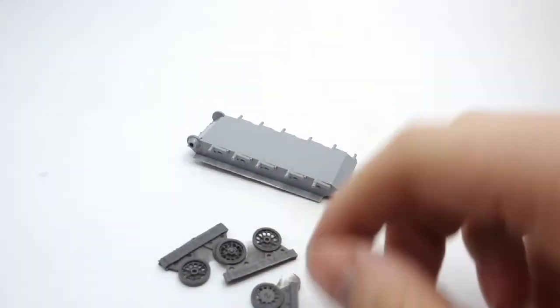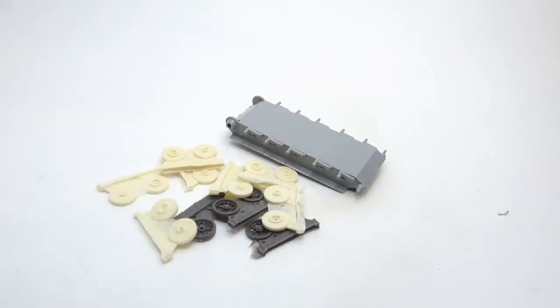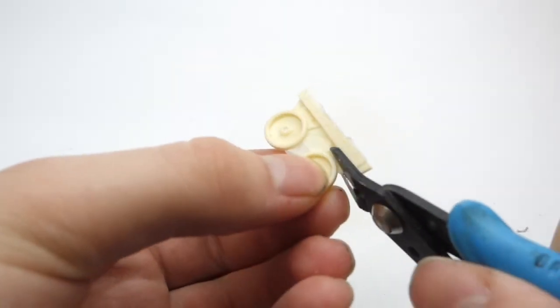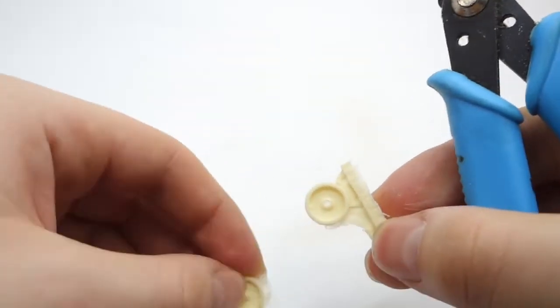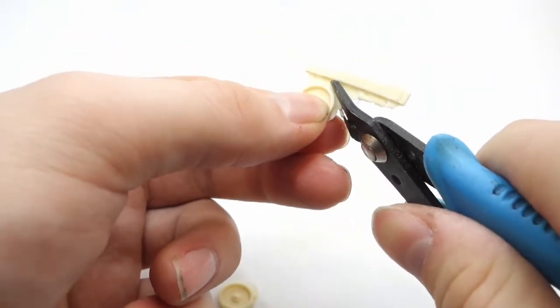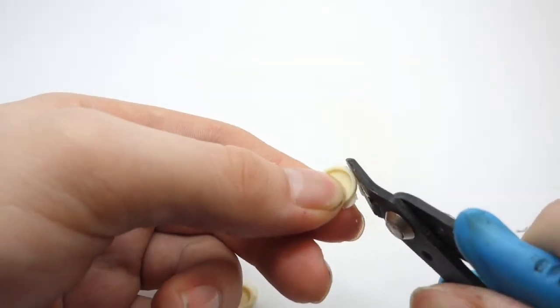I'm converting this T-34 into a slightly later variant, and because of that I have to replace wheels from the kit with a later stamped type. For this purpose I used some leftover SU-85 wheels from my previous project and to add some variety, I mixed in some resin wheels from OKB Grigorov.